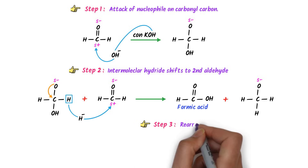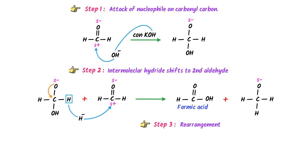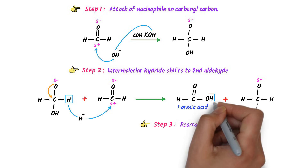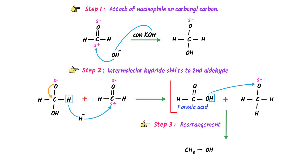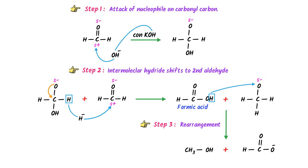The third and last step is rearrangement of molecules. The oxygen carries a partial negative charge. The hydrogen of formic acid is transferred to this oxygen. As a result, I get alcohol CH₃OH, known as methanol. The remaining reactant is H-C(=O)-O⁻. If you add the positive part of the base — potassium — to this oxygen, it becomes a salt of carboxylic acid, potassium formate. This is the complete mechanism of Cannizzaro reaction.